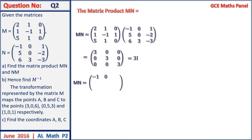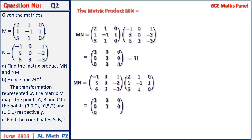Similarly, NM equals matrix N times matrix M, and this product equally gives us a 3 by 3 matrix: 3, 0, 0, 0, 3, 0, 0, 0, 3, which is also 3 times the identity matrix. From here we conclude that MN equals NM. Do not make the mistake of saying M and N are inverses — that is incorrect because MN equals 3I, not I.